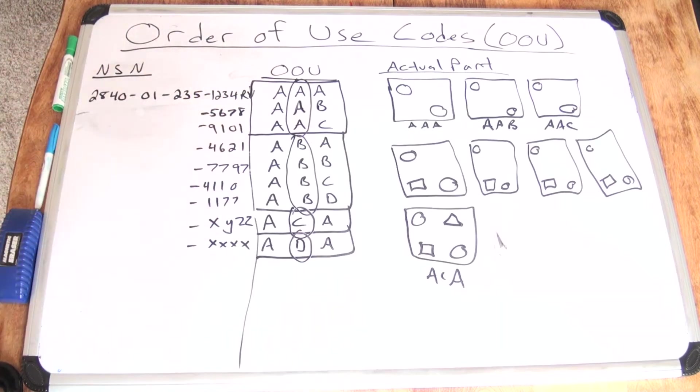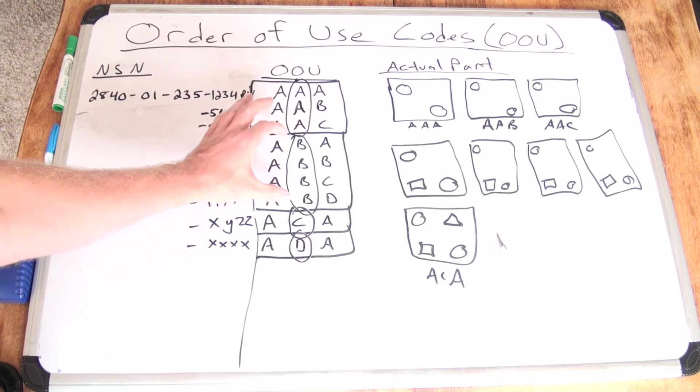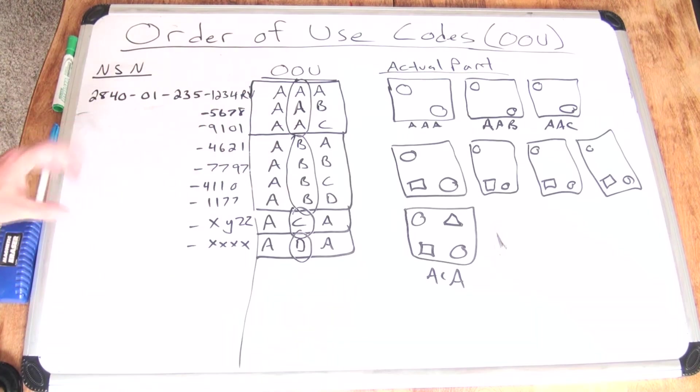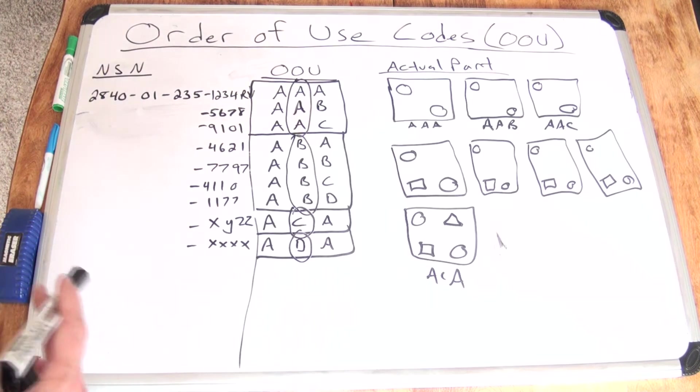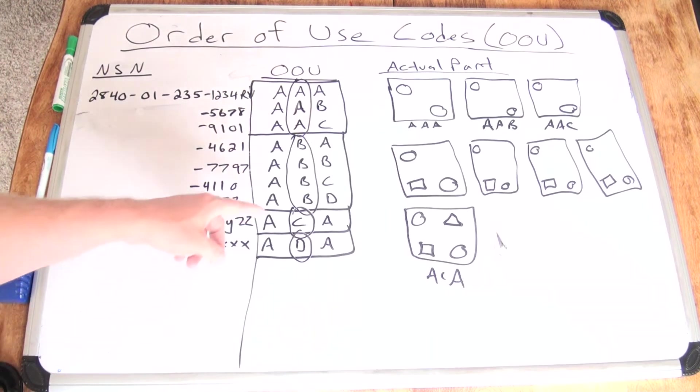Going to subgroup B, same thing. Within subgroup B, you can interchange any one of these stock numbers, any one of these four stock numbers, and the technician will not know the difference. It'll all go in. It'll all be by regulation. C and D as well.